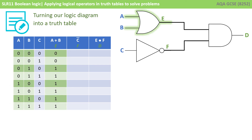Now we start working through the truth table. Let's start with the OR gate, which takes in A and B. Remember, if either of those is one, the output E should be one — and you can see I've filled it out here with zeros and ones as appropriate. Now dealing with the NOT gate: it only has one input, C, and it's straightforward — whatever's in C is flipped to become F. So the zeros become ones and the ones become zeros, and you can see I've done that there.